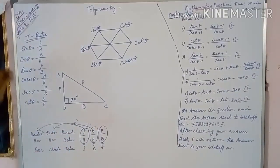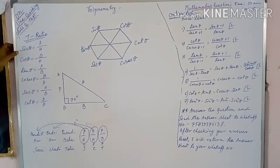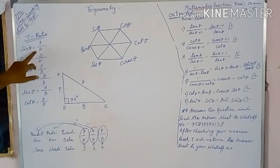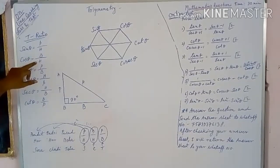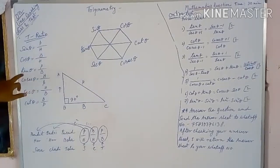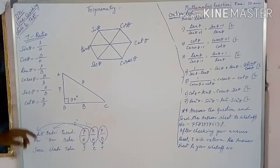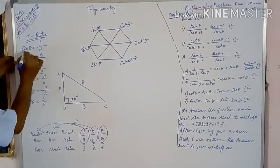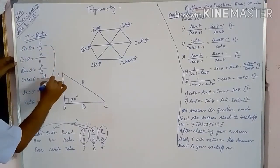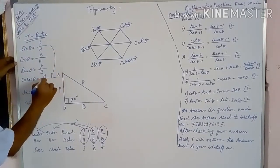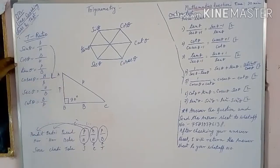In trigonometry, we know that sin theta is equal to perpendicular by hypotenuse, cos theta is equal to base by hypotenuse, tan theta is equal to perpendicular by base, and the reciprocal of sin theta is cosec theta, that will be hypotenuse by perpendicular.